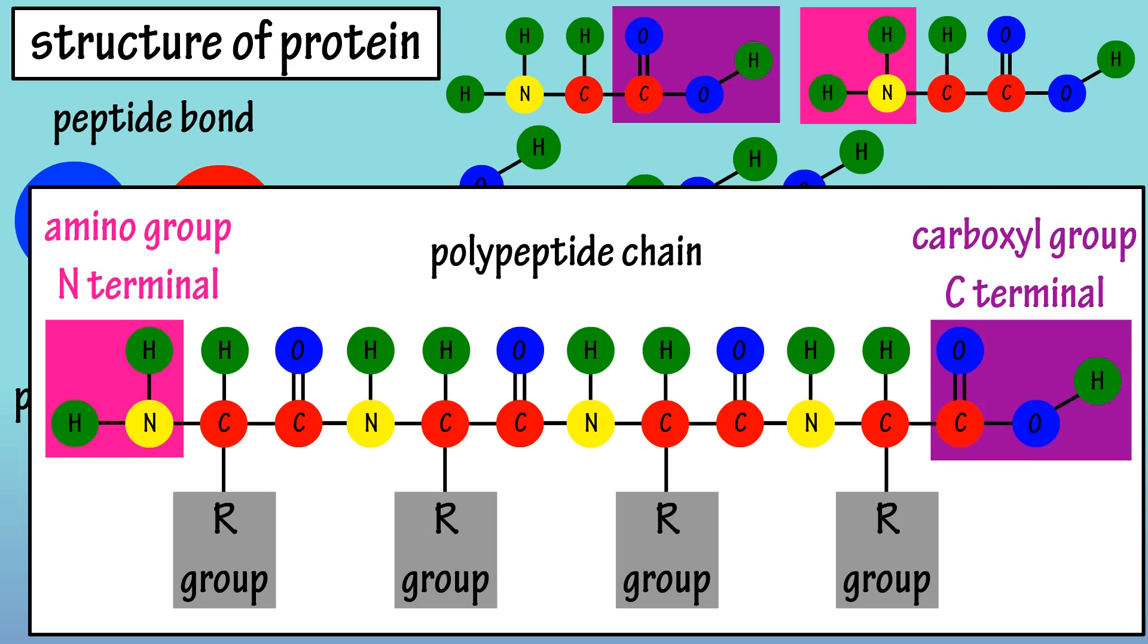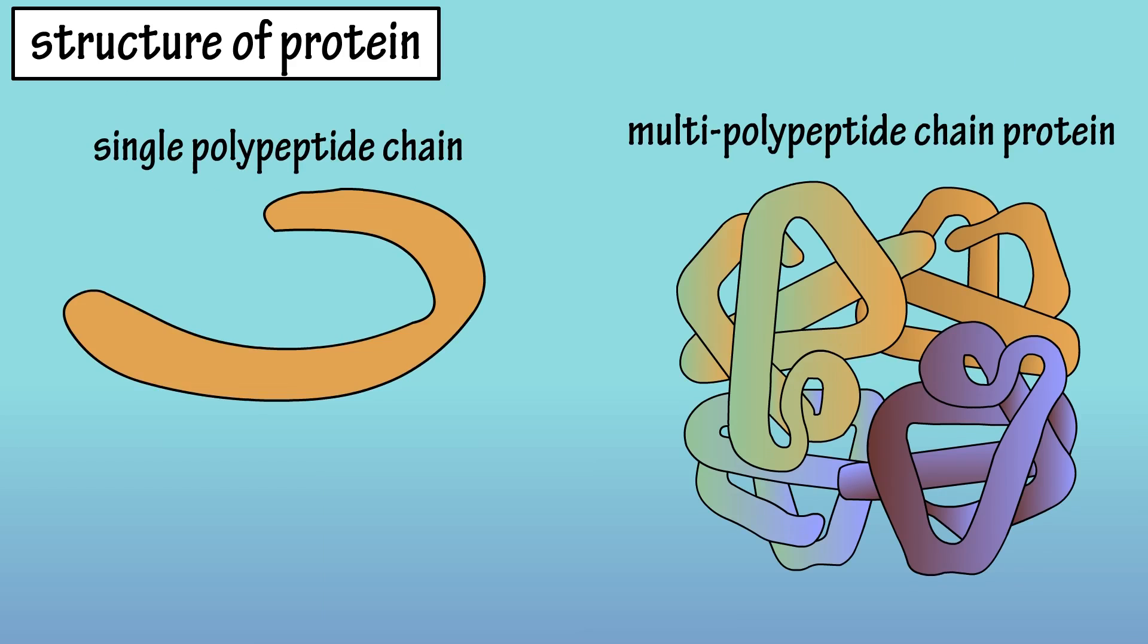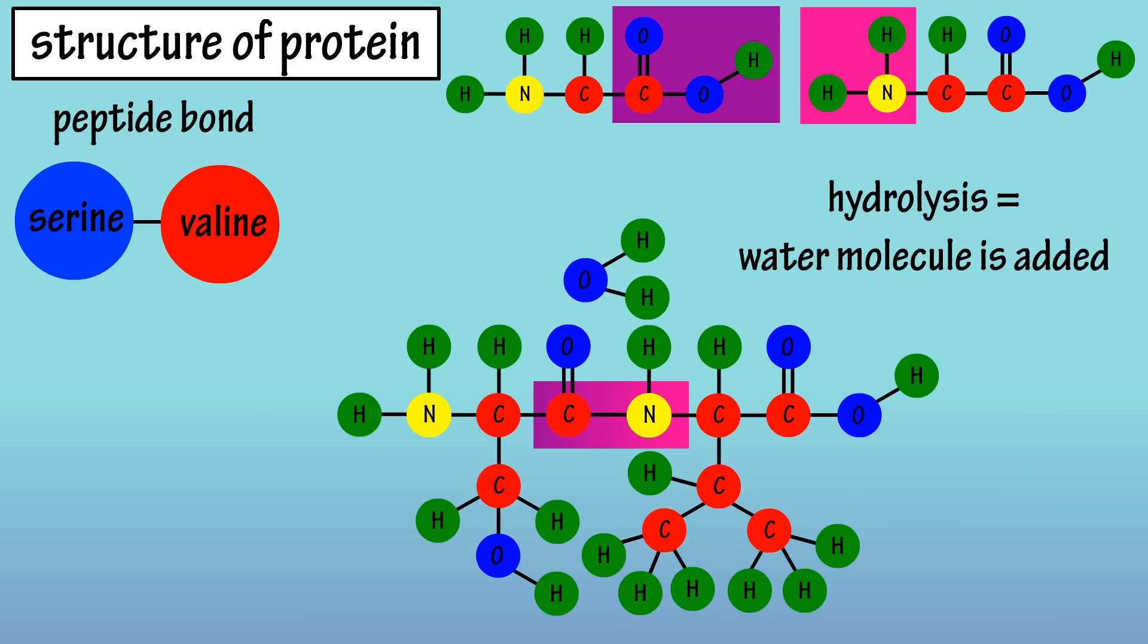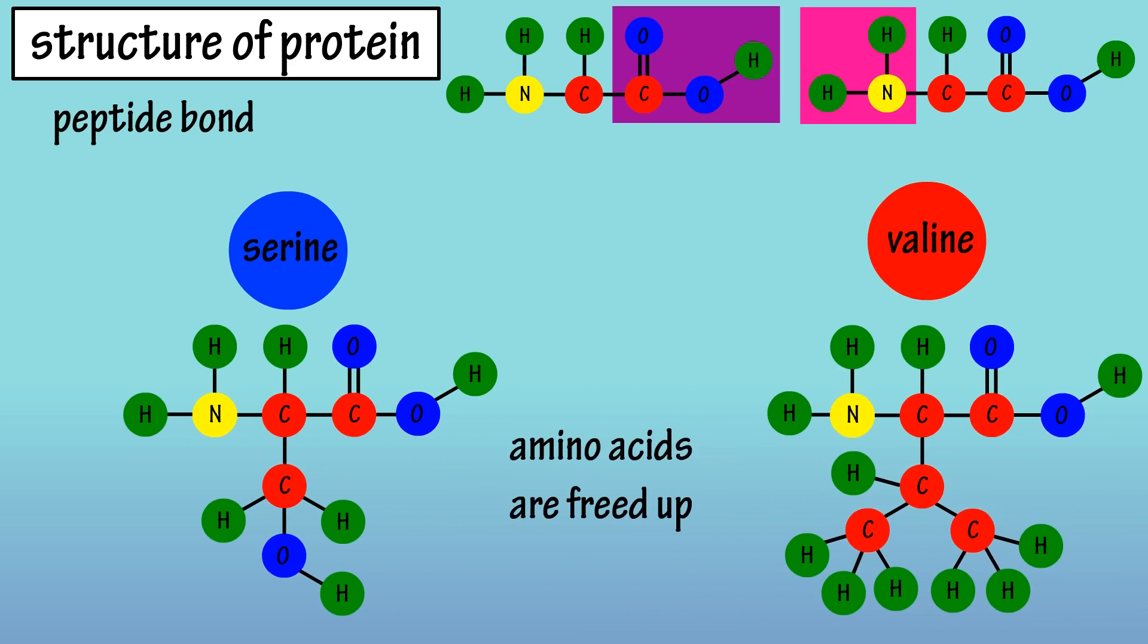Some proteins are single polypeptide chains, and other proteins have polypeptide chains linked together. Individual amino acids can also be released from a peptide chain by the decomposition reaction, hydrolysis. In hydrolysis, a water molecule is added, breaking the peptide bond and freeing up an amino acid.